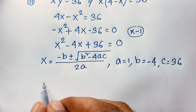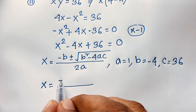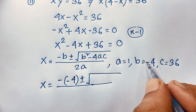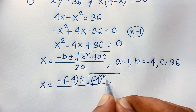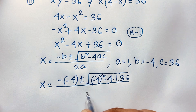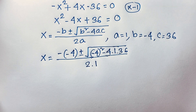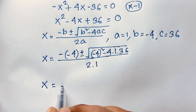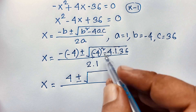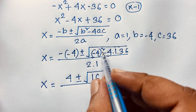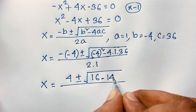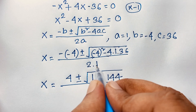So x will be minus b — since b is negative 4, minus b is plus 4 — plus or minus square root of b squared, which is negative 4 squared, minus 4 times a times c. Since a is 1 and c is 36, that gives 4 times 36 equals 144. All over 2 times a, which is 2 times 1, so 2.